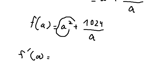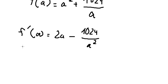So first derivative of A squared, we have 2A. First derivative of this one, we have negative 1024 over A squared. So we put this first derivative of the function equals to number 0.